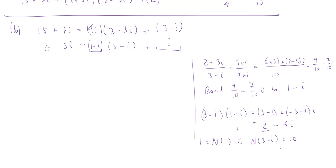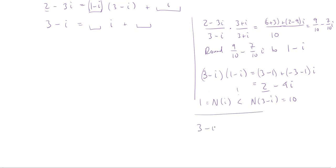We could naively keep going — we'd shift again and say 3 minus i = something times i plus something. But i is a unit, so we should stop. Let's pretend we didn't know that and keep going. Dividing 3 minus i by i, we multiply by the complex conjugate of i. On the bottom we get the norm, which is 1. On the top, negative i times negative i gives negative 1, and 3 times negative i gives minus 3i. So the result is negative 1 minus 3i, which is itself a Gaussian integer — meaning i actually divides 3 minus i. There's no remainder: the quotient is negative 1 minus 3i and the remainder is 0.